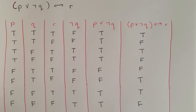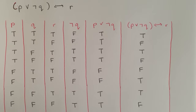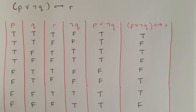So that is the general gist of truth tables. I hope this has been helpful and makes things a little clearer. Thanks guys.